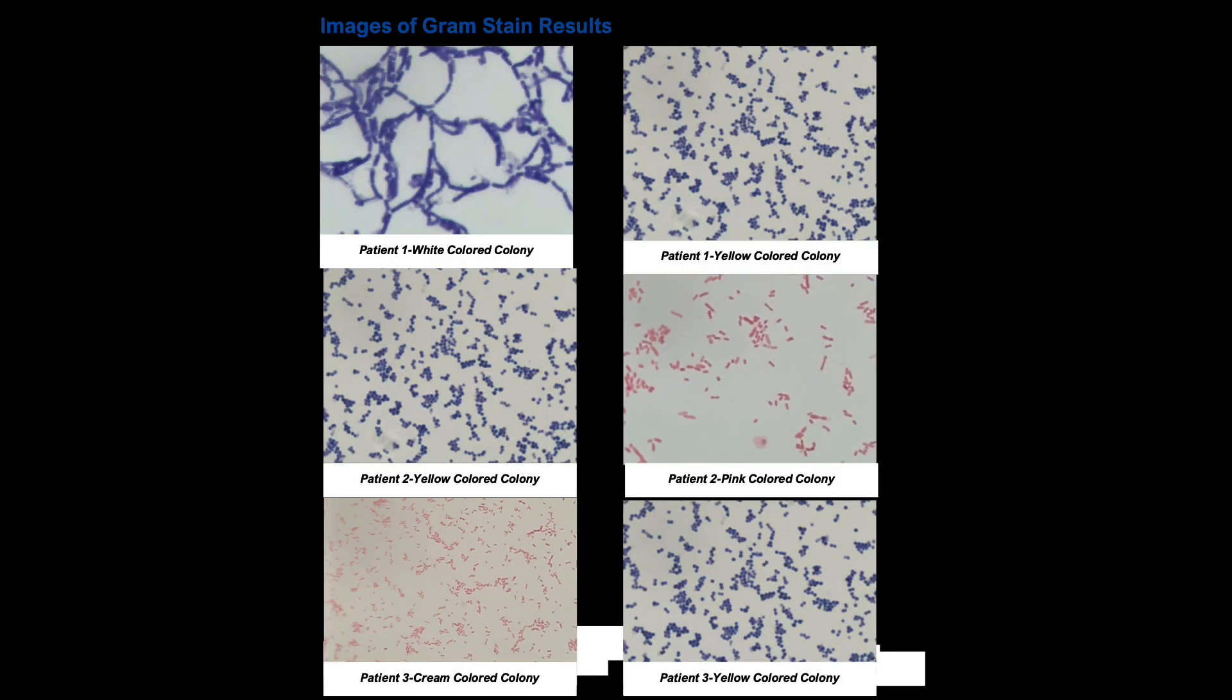For comparison, these are the expected results provided to us from Project Lead the Way. Remember, we Gram stained the yellow colored colonies from each of the patient samples, one, two, and three, and that should be from the screen here, what you see on your own slides. If you saw something different, it could have been that you got a different colored colony that you were working with when you did your Gram stain.